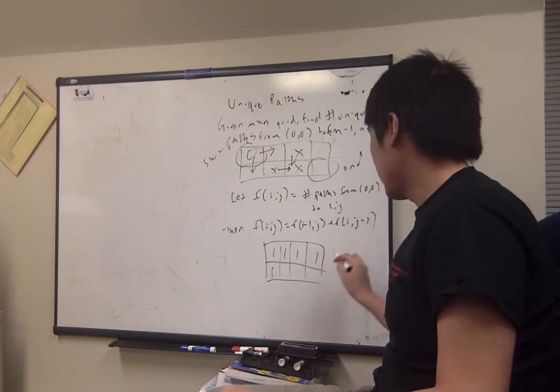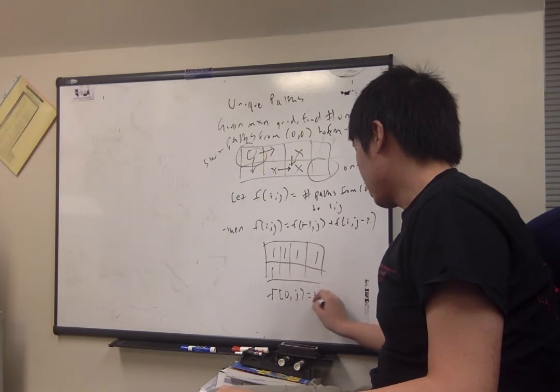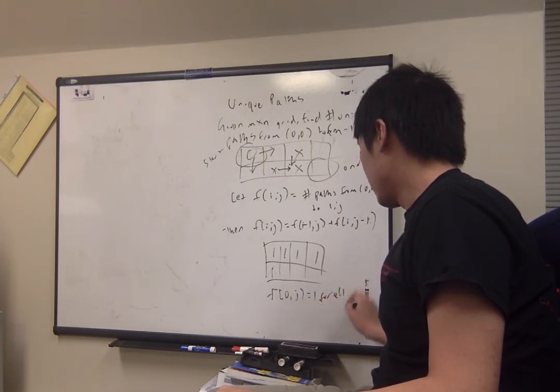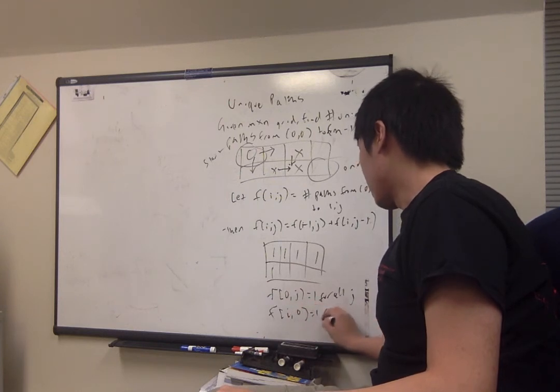So we'll just say that f of 0,j equals 1 for all j, and f of i,0 equals 1 for all i.